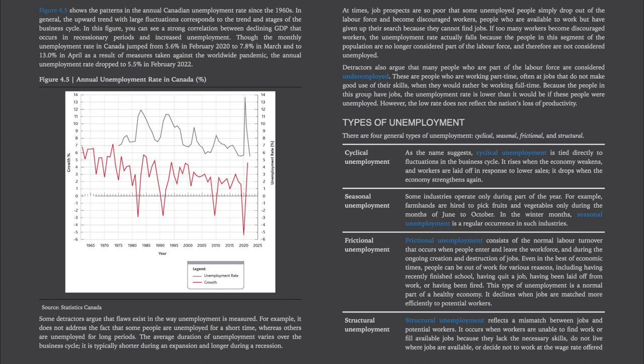Detractors also argue that many people who are part of the labor force are considered underemployed — people that are working part-time, often at jobs that do not make good use of their skills, when they would rather be working full-time. Because the people in this group have jobs, the unemployment rate is lower than it would be if these people were unemployed. However, the low rate does not reflect the nation's loss of productivity.